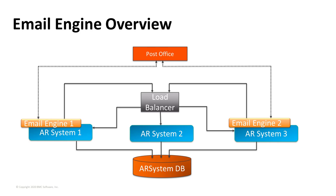Let's do a quick recap of the email engine environment, which might help provide context to much of the information we're going to present today. This is a diagram showing the physical layout of a typical email engine environment. You can have multiple active email engines that reside on the same box as the AR server. The email engines can connect directly to the local AR system, or they can use a load balancer to connect to a pool of AR servers. This can help distribute your email engine load in the same way that you distribute user traffic.